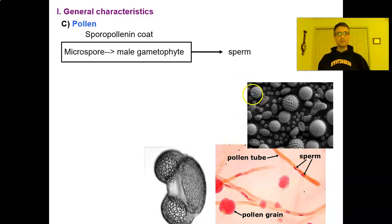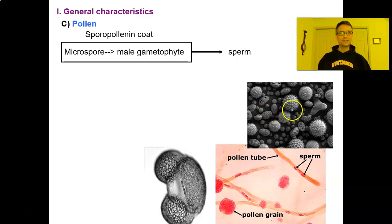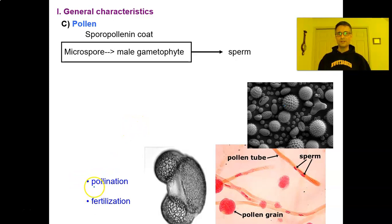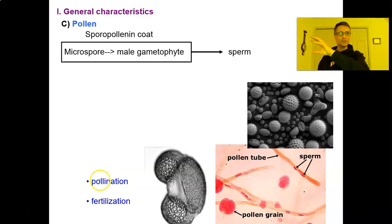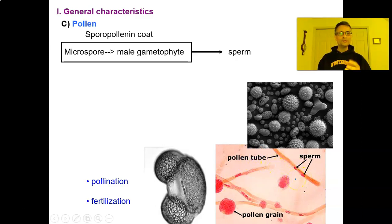Pollen grains from many species have very particular, unique, and distinctive coats. An important distinction: pollination is when a pollen grain moves from where it formed to the ovule it will fertilize — but fertilization hasn't happened yet. Fertilization occurs when the pollen tube grows, the sperm nucleus travels down it, and fuses with the egg cell nucleus to give a zygote.